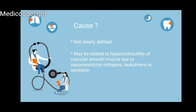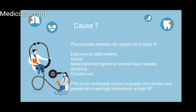The cause, even to date, is not very clearly defined or pinpointed, but we know a lot about the disease. It may be due to hypercontractility of vascular smooth muscle to vasoconstrictor mitogens, leukotrienes, or serotonin — the endothelial smooth muscle becomes hypersensitive in certain patients. Prinzmetal's variant angina is most commonly seen in patients who smoke and in people who have high blood pressure or high cholesterol.